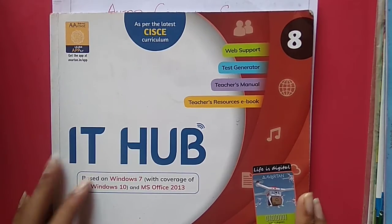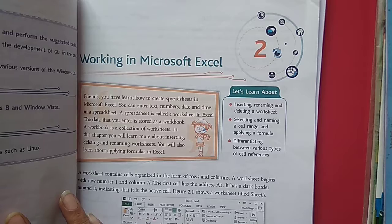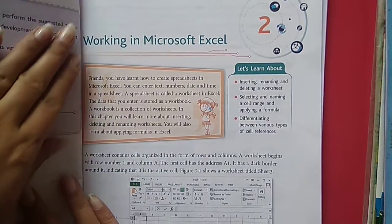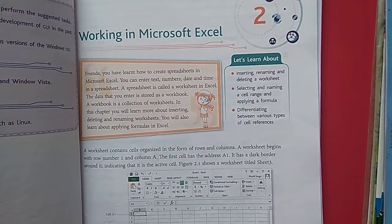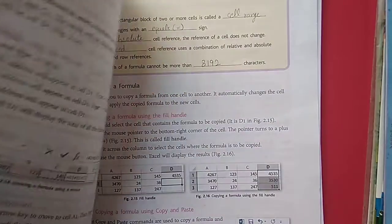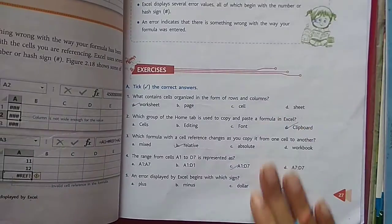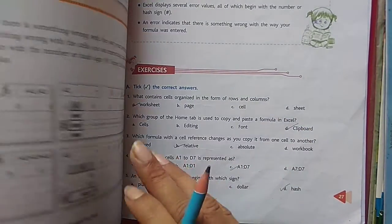So dear 8th class students, we have completed our chapter number 1. Now we will move to chapter number 2 for revision — that is Working in Microsoft Excel. In this chapter, we already learnt how we can make tables, worksheets, sheets, formulas and errors. So now we are going to read our exercise and let's review the fill-ups.